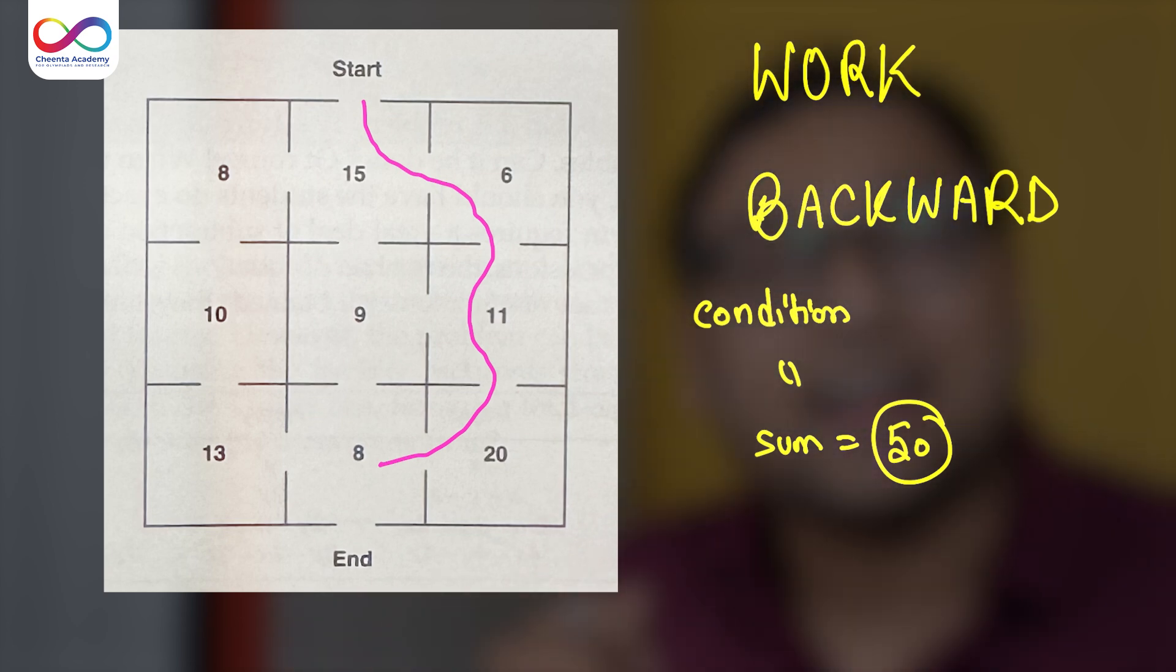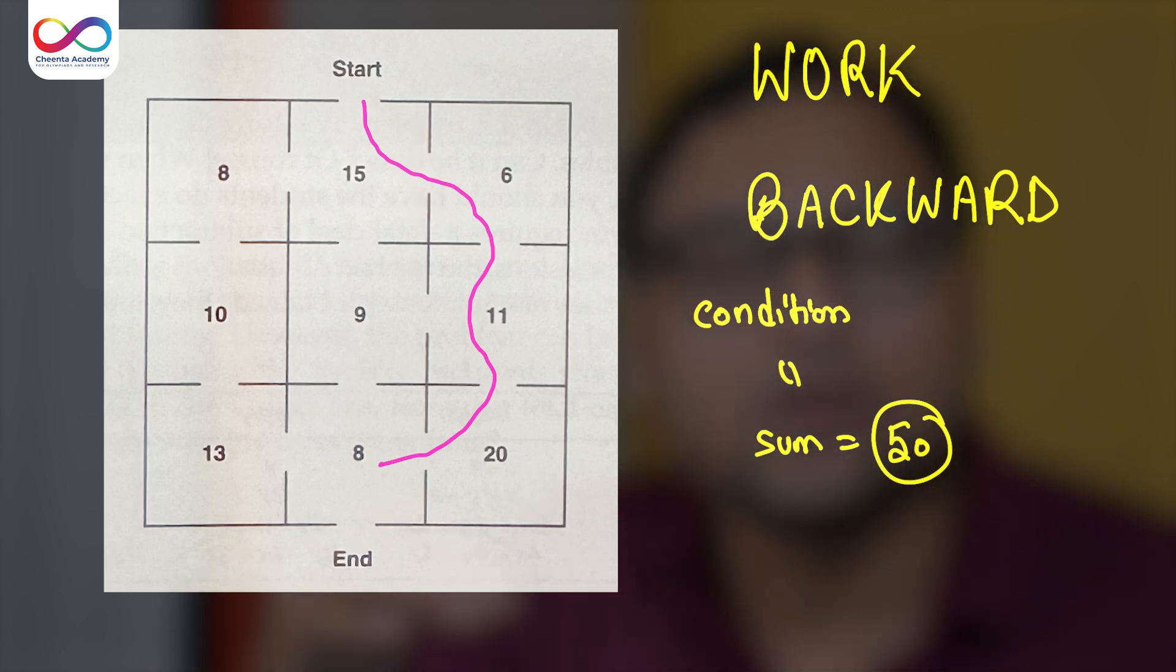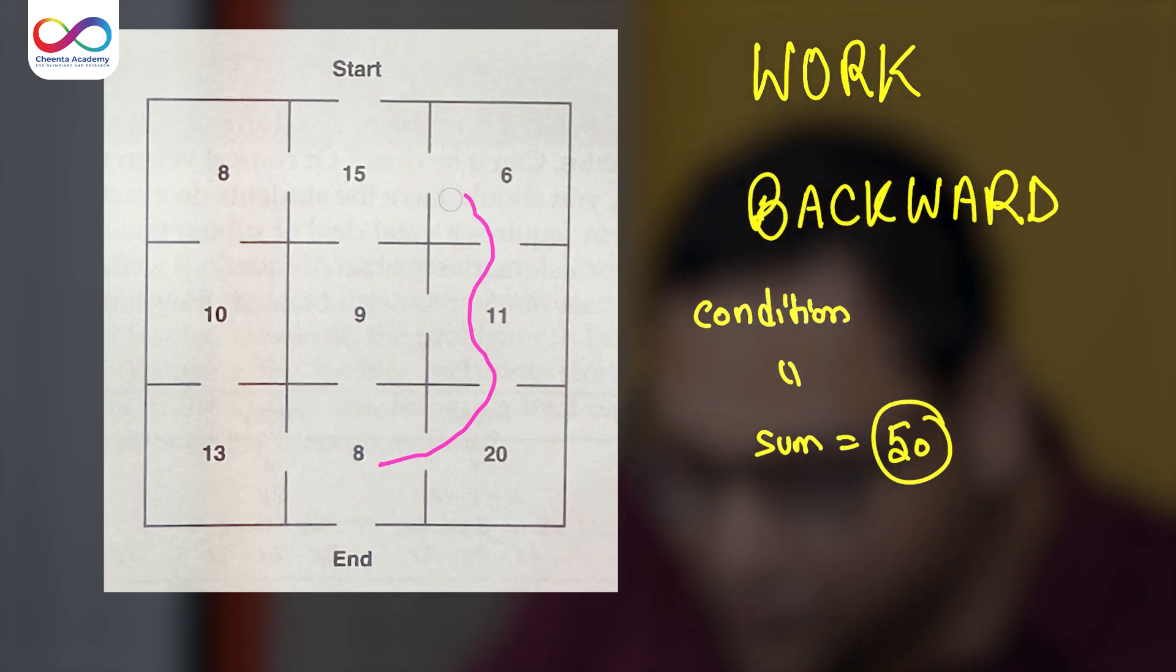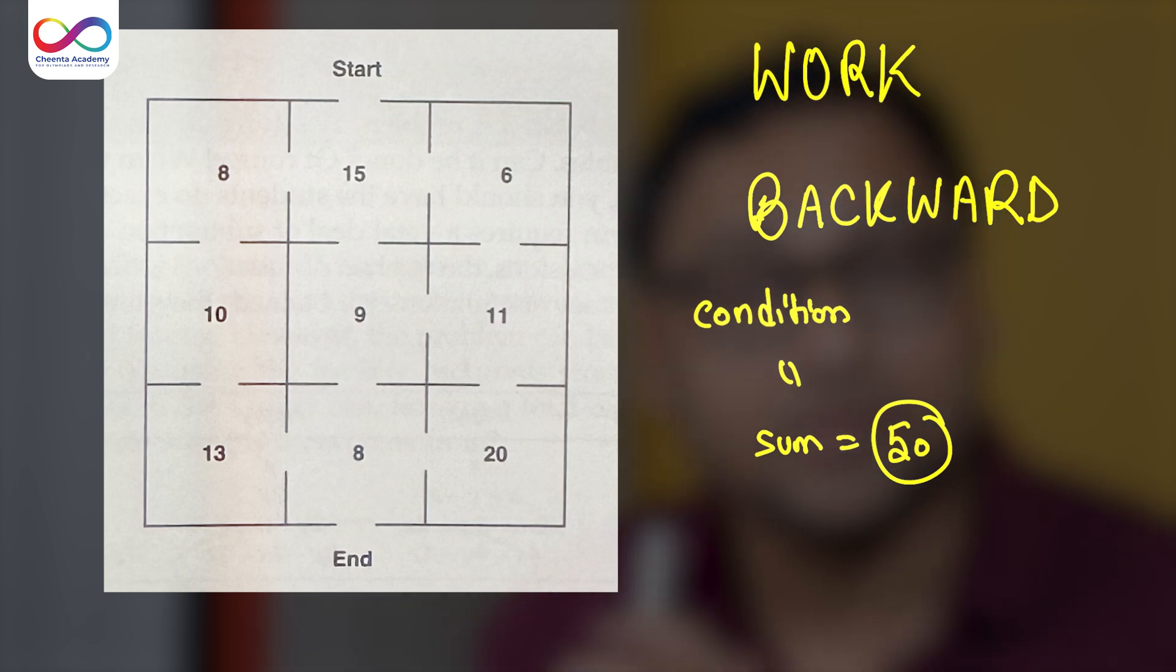Also you can't backtrack. If you once go through a particular door, that door sort of closes. The question is, can you find a path from start to end such that the sum of the numbers in the boxes that you go through is 50.